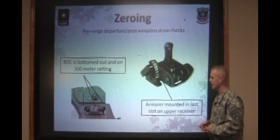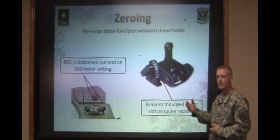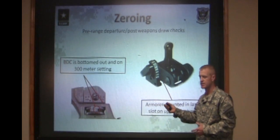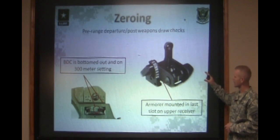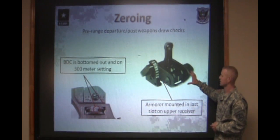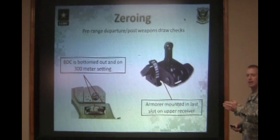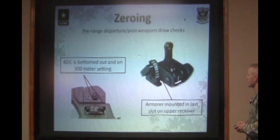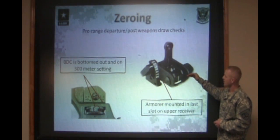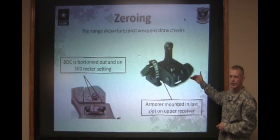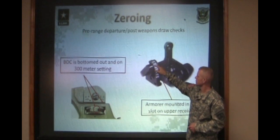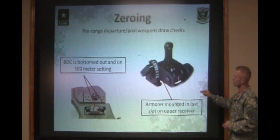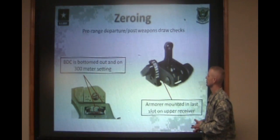For the M16 A2 rifle, you need to zero at 25 meters at 8-3 plus 1. For the M4s, it will be 6-3 for that carrying handle. On the backup iron sight, make sure the armor mounted the backup iron sight in the very last slot on the upper receiver — it needs to be in this slot for the sight system to work correctly. For zeroing the backup iron sight on an M4, it needs to be on the 300 notch. For zeroing the backup iron sight on an A4, put it on the little white line in between the 300 and the 400 yard settings.